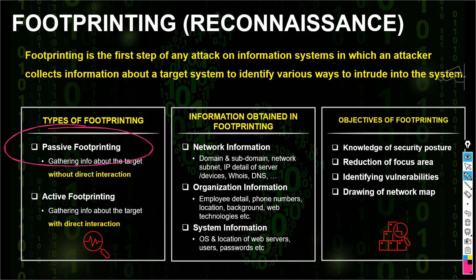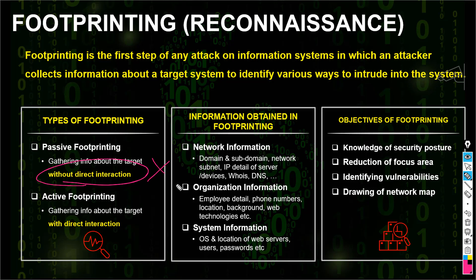There are mainly two types of footprinting. The first is called passive footprinting, where we gather information without direct interaction — the target does not know we are collecting information about them. The second is active footprinting, where we collect information with direct interaction with the target.